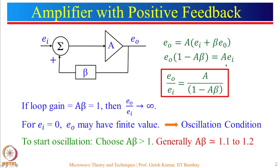Taking the ratio, E_0 divided by E_i equals A divided by (1 − A·beta). The loop gain here is A multiplied by beta. If A·beta equals 1, then (1 − A·beta) becomes 0, and A divided by 0 becomes infinity. So if loop gain equals 1, E_0 divided by E_i becomes infinity. Now think about this: if E_i equals 0 then E_0 may have any finite value — 1, 2, or 3 — because any number divided by 0 is still infinity.